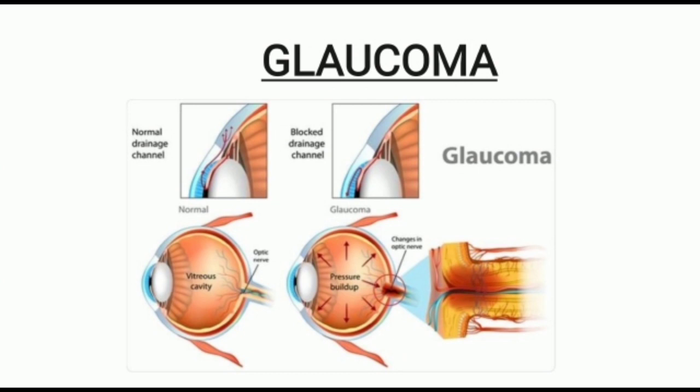As you can see in this figure, the drainage channel of a Glaucoma eye versus a normal eye. In Glaucoma, the drainage channel is blocked, while in the normal eye the drainage channel is open. The next figure shows changes in the optic nerve and pressure buildup in the vitreous cavity.